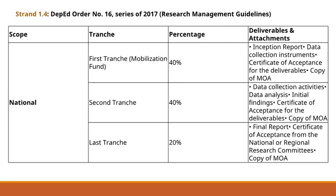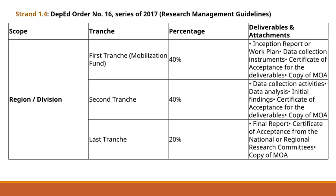For national-level research, funds are released in three tranches. The first tranche, 40%, is given upon submission of the Inception Report, data collection tools, and signed MOA. The second tranche, another 40%, is released after data collection, analysis, and initial findings are submitted with a Certificate of Acceptance. The last tranche, 20%, is released only upon submission and acceptance of the final report by the national or regional research committees. For school leaders, this means ensuring timely submission of deliverables to sustain funding throughout the research process.